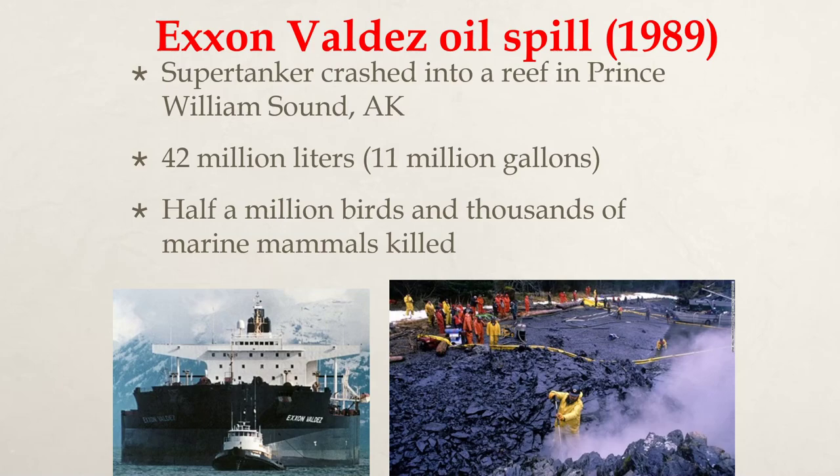The Exxon Valdez oil spill in 1989 was when a supertanker crashed into Prince William Sound in Alaska. 42 million liters, or 11 million gallons, were released, and half a million birds and thousands of marine mammals were killed.